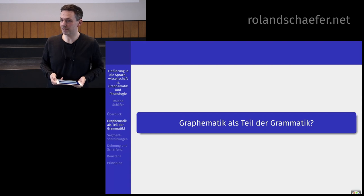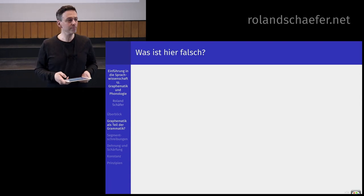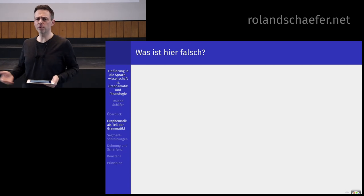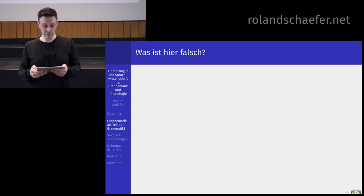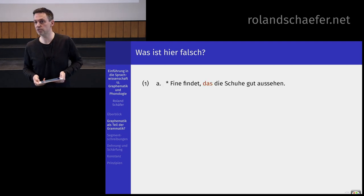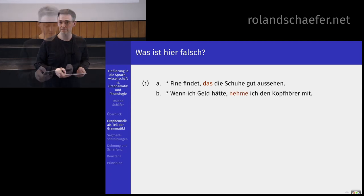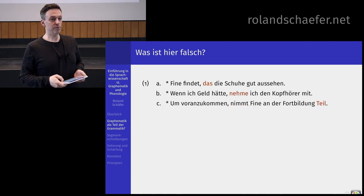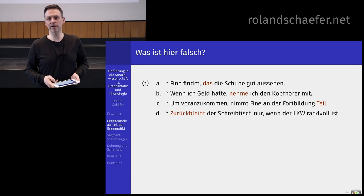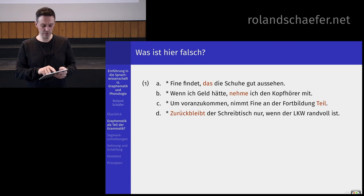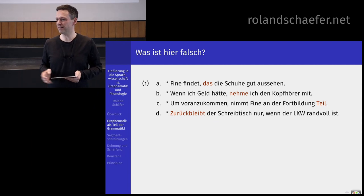Jetzt kommen wir zur Graphematik als Teil der Grammatik. Wir machen uns Gedanken, was ist in diesen Sätzen falsch: Fiene findet, dass die Schuhe gut aussehen. Wenn ich Geld hätte, nehme ich den Kopfhörer mit. Um voranzukommen, nimmt Fiene an der Fortbildung teil. Und mein Lieblingsbeispiel: zurückbleibt der Schreibtisch nur, wenn der Lkw randvoll ist. Merken Sie was? Sie können das so vorlesen, dass Sie dieser Schreibung entsprechen in dem, was Sie da realisieren.